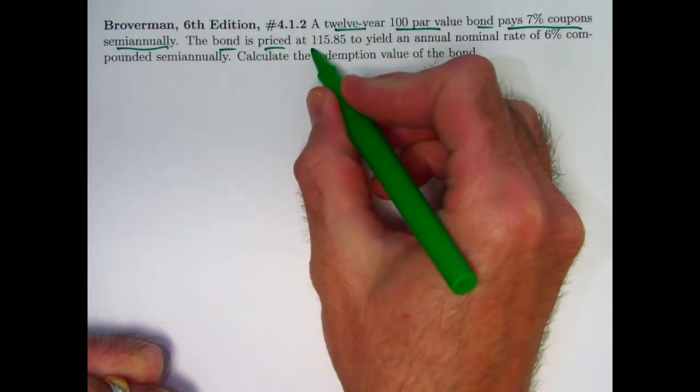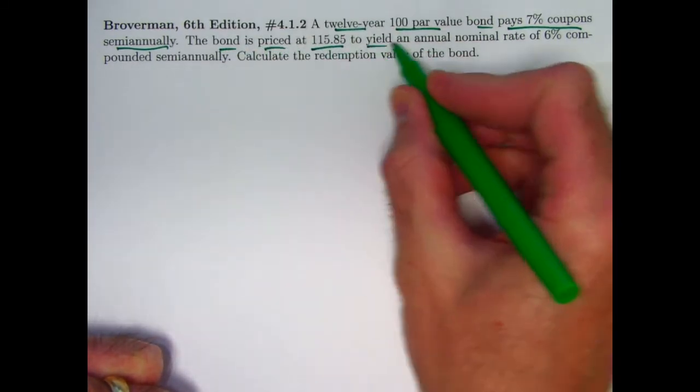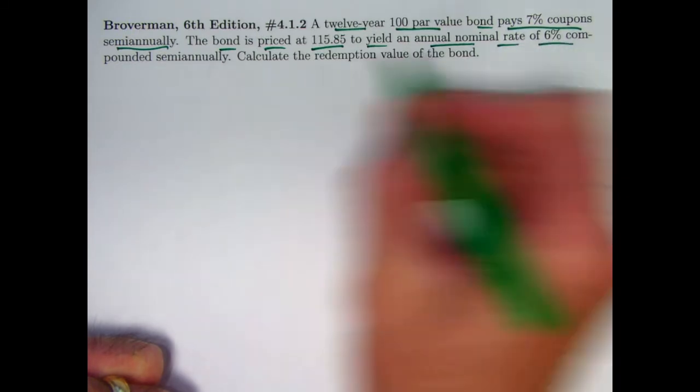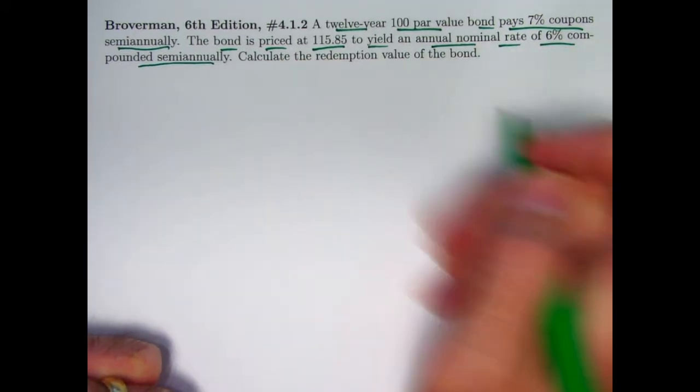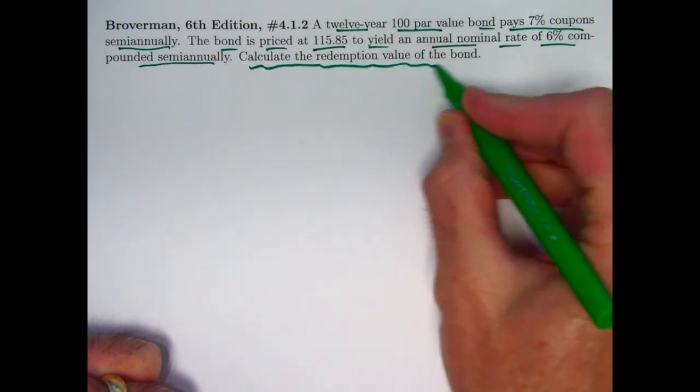The bond is priced at $115.85 to yield an annual nominal rate of 6% compounded semi-annually. Again, that would be the assumption if it was not stated. Calculate the redemption value of the bond.